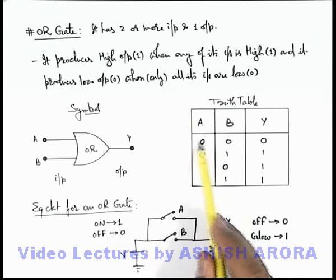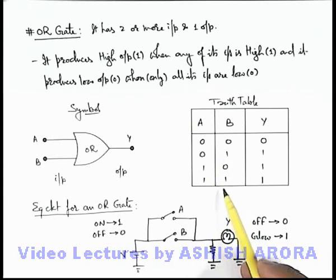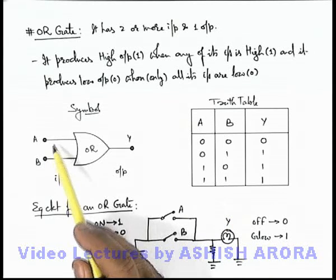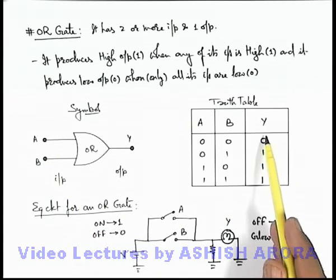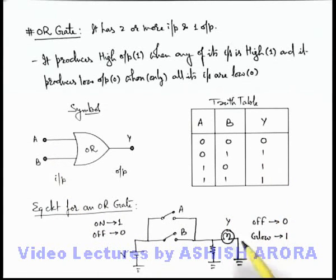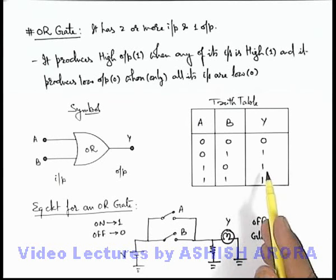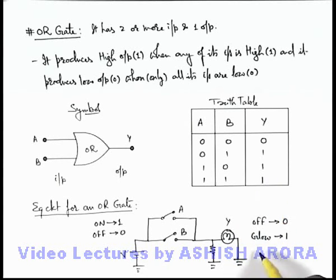In all these 4 combinations of signal voltages at A and B, here you can see the output Y we are getting according to the off and closed state of this bulb according to the truth table. So this is the equivalent circuit for understanding the OR gate. If either switch A or switch B, either of these are closed, the output will be high.